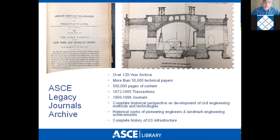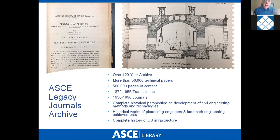I bring this up because when you do a search on the ASCE library, you will likely have results that represent content before 1983 — let's say 1980 or 1976. There's an article, it'll show up in the results, but you're not going to be able to open it because the library hasn't bought it yet. We'll propose that to the libraries. I don't want to make this a sales thing; I'm just making you aware that it can sometimes be frustrating when you're trying to access something you can't open or download.